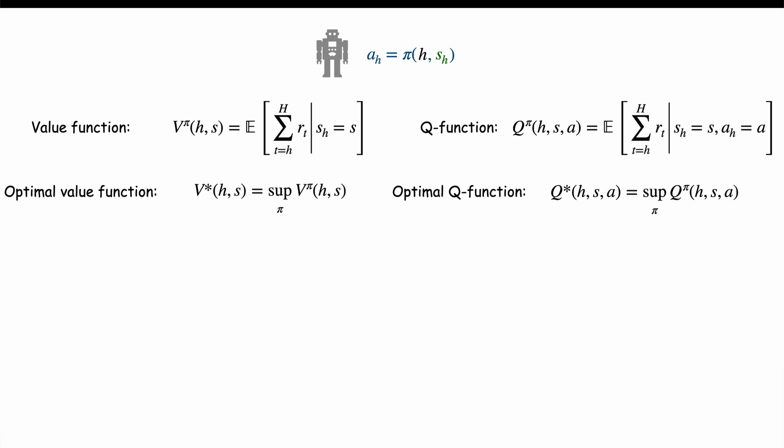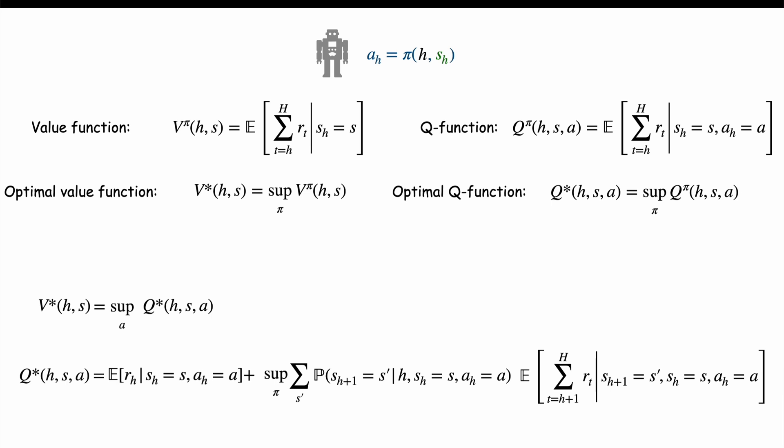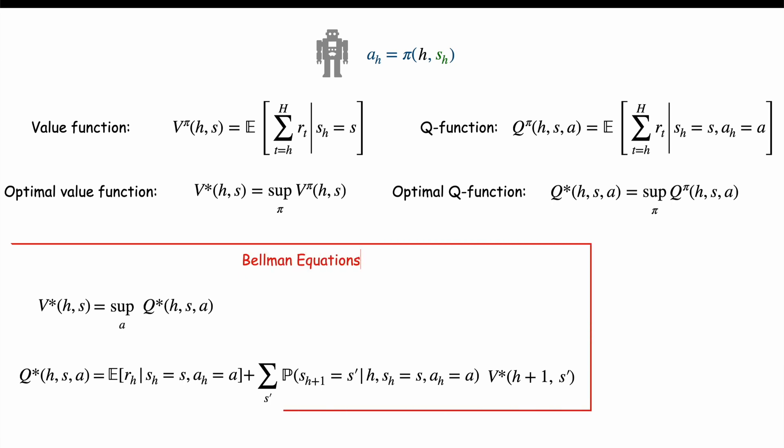Now let us see how those are connected. If the agent is at state S at time H, the best possible cumulative reward we can hope for is V star of HS. But for that we first need to choose the best possible action A at time H and state S, and after that we need to achieve the best possible Q function and therefore Q star. Now let's look at Q star. The first term in the sum only depends on the given starting time state and action HSA. And then, those take our agent to a new state S H plus one following the probability transition. From that new state S H plus one, the best cumulative reward we can hope for is V star of H plus one S H plus one. And this gives a complicated equation for Q star. And there you obtain two intertwined equations to describe Q star and V star. Those equations are called Bellman equations.